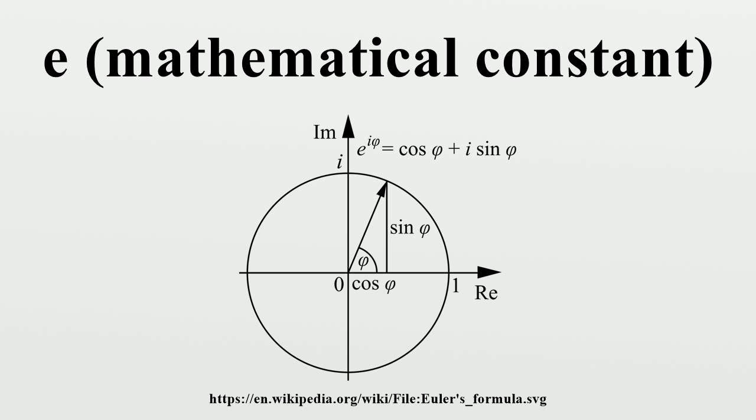Jacob Bernoulli discovered this constant in 1685 by studying a question about compound interest. An account starts with $1 and pays 100% interest per year. If the interest is credited once, at the end of the year, the value of the account at year end will be $2.